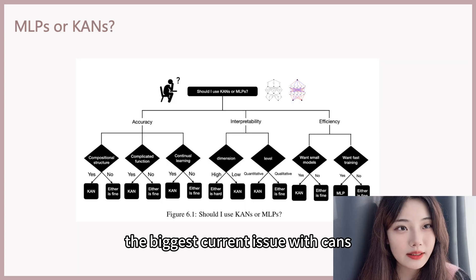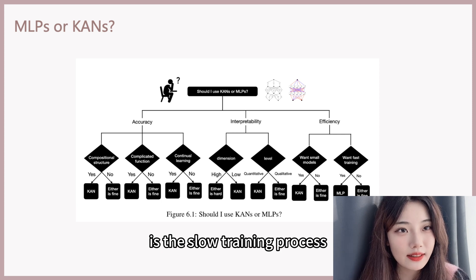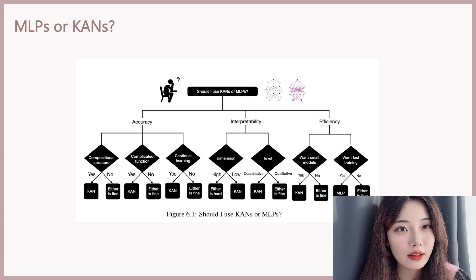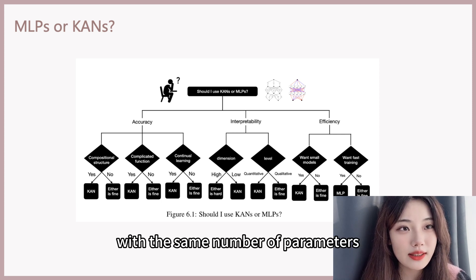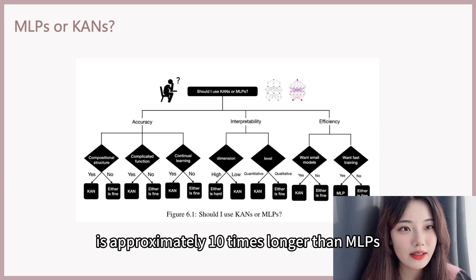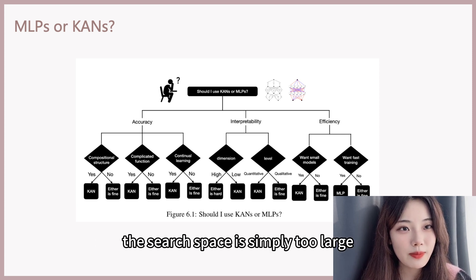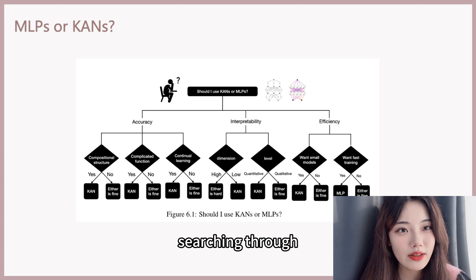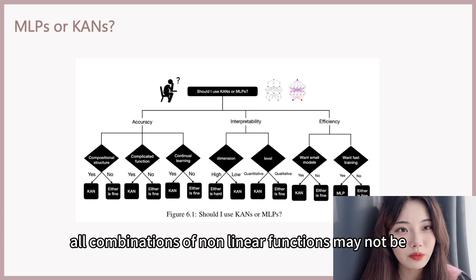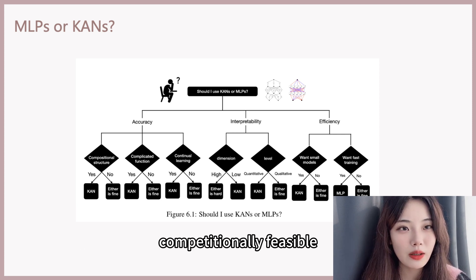The biggest current issue with KAN is the slow training process. With the same number of parameters, the training time of KAN is approximately 10 times longer than MLPs. The search space is simply too large. Searching through all combinations of nonlinear functions may not be computationally feasible.